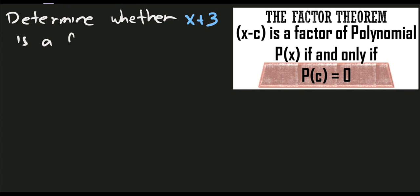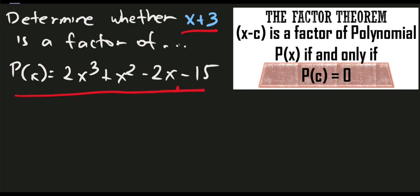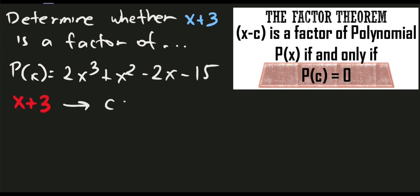Let's answer another problem. Let's determine whether x plus 3 is a factor of p of x equals 2x cubed plus x squared minus 2x minus 15. Same procedure: let's identify the value of c. Since we have x plus 3, the value of c is negative 3. Same procedure — let's plug in the value of negative 3 to our original polynomial.